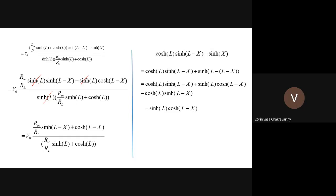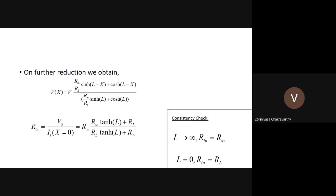The final formula for V_m(x) for the finite cable with arbitrary loading is: V_0 · [R_∞/R_L·sinh(L−X) + cosh(L−X)] / [R_∞/R_L·sinh(L) + cosh(L)]. We still have V_0 as an unknown and only know I_0, so we need to find V_0 by computing the input impedance R_in, since V_0 = R_in · I_0.